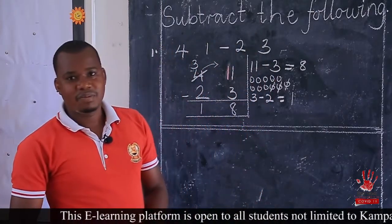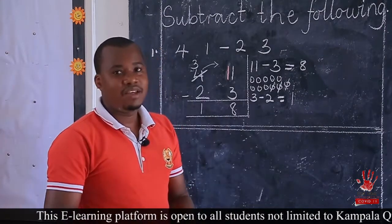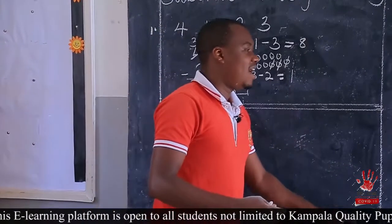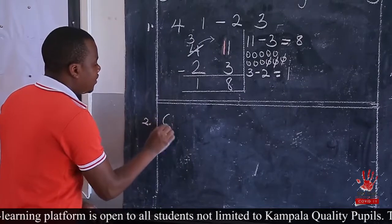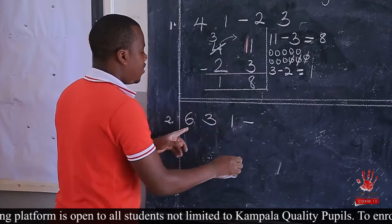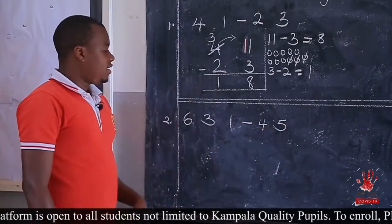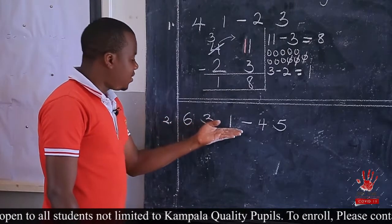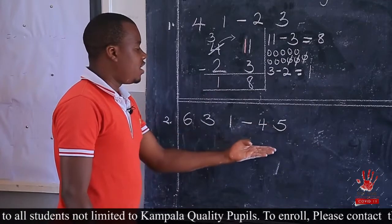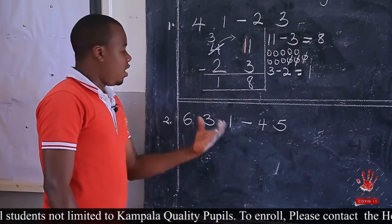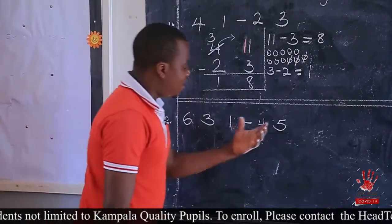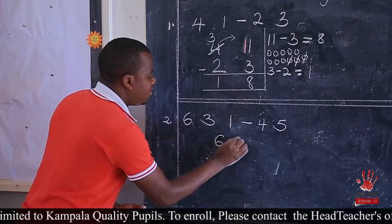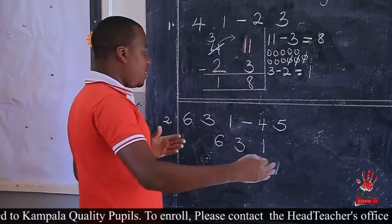Have you followed that first example? If you have some challenges, I'm giving another example here, and you must pay attention so that you don't get the same issues. Number 2: 631 take away 45. You realize this one is a three-digit number and this one is a two-digit number. The challenge is in arranging — when you arrange wrongly you will not get the answer, but when you arrange perfectly you will automatically get the answer.